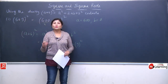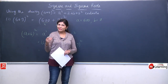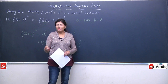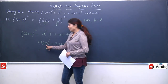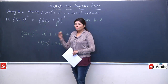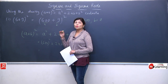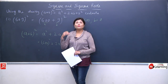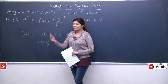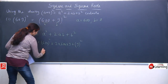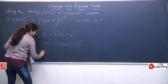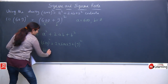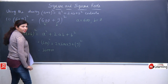Now 600 ka square nikalna is very easy because here we just find 6 ka square. 6 ka square is 36, and there are 2 zeros here. When we square a number with zeros, the zeros get doubled — so 2 zeros become 4 zeros. So 600² = 360000. The answer will be 36 followed by 4 zeros.